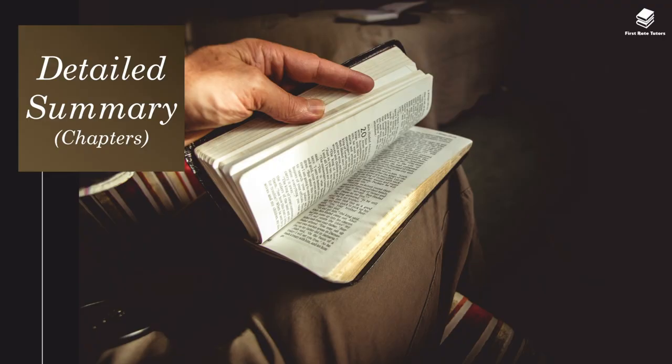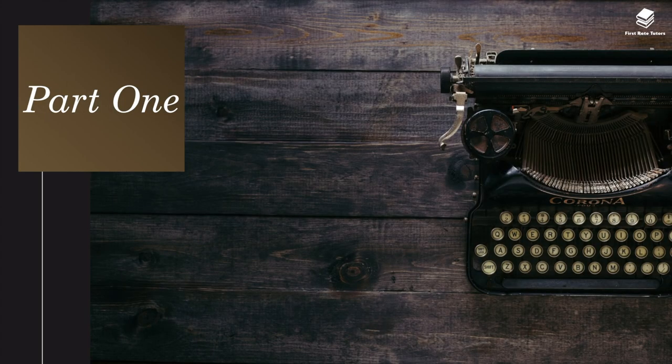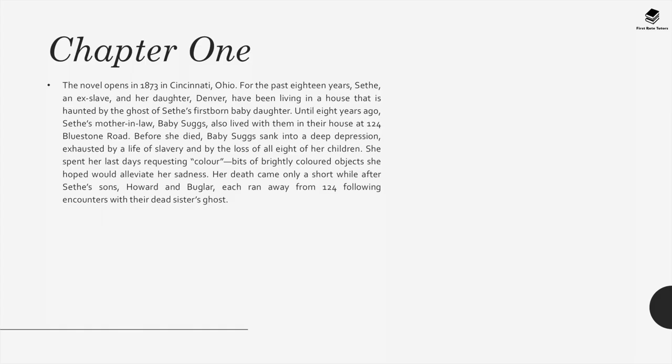Moving on to a detailed summary of each chapter. Part 1, Chapter 1: The novel opens in 1873 in Cincinnati, Ohio. For the past 18 years, Sethe, an ex-slave, and her daughter Denver have been living in a house haunted by the ghost of Sethe's first-born baby daughter. Until eight years ago, Sethe's mother-in-law, Baby Suggs, also lived with them in their house at 124 Bluestone Road.